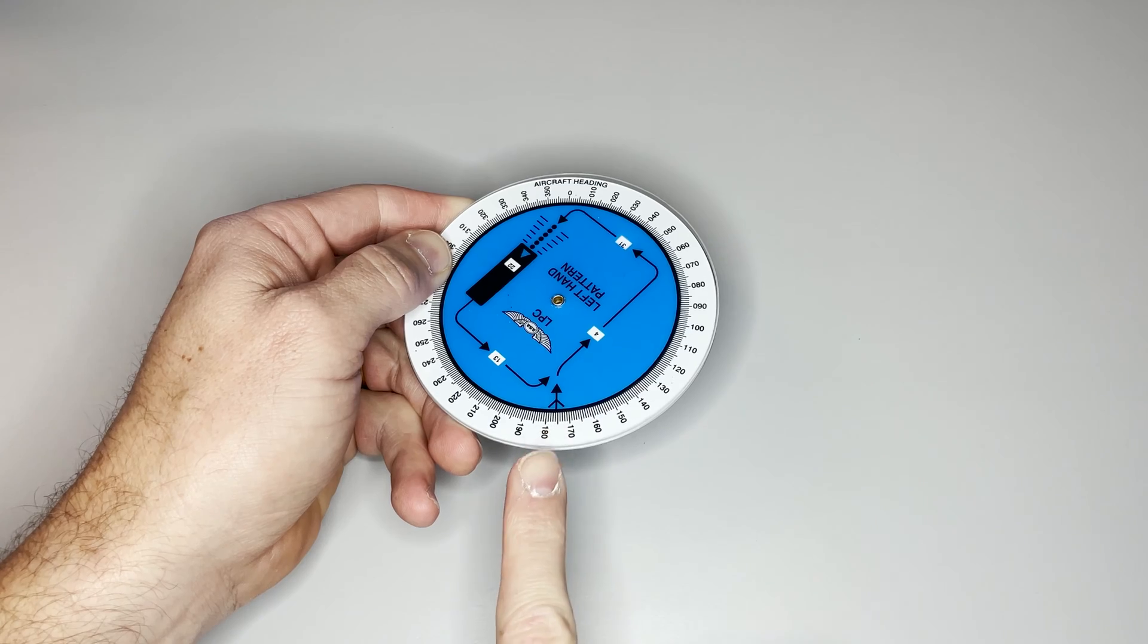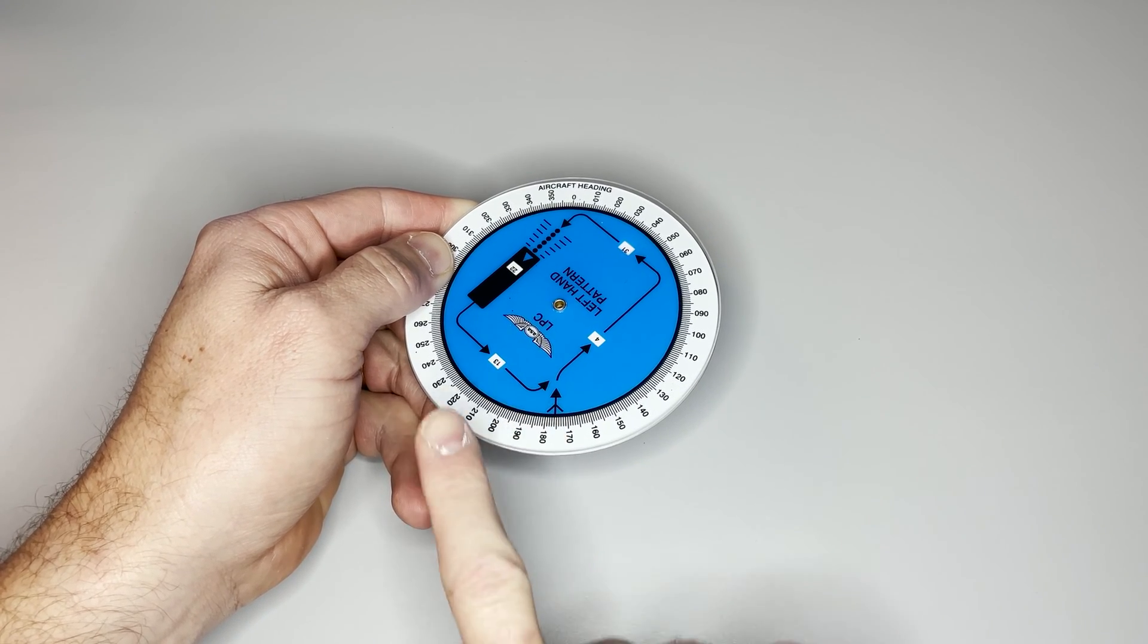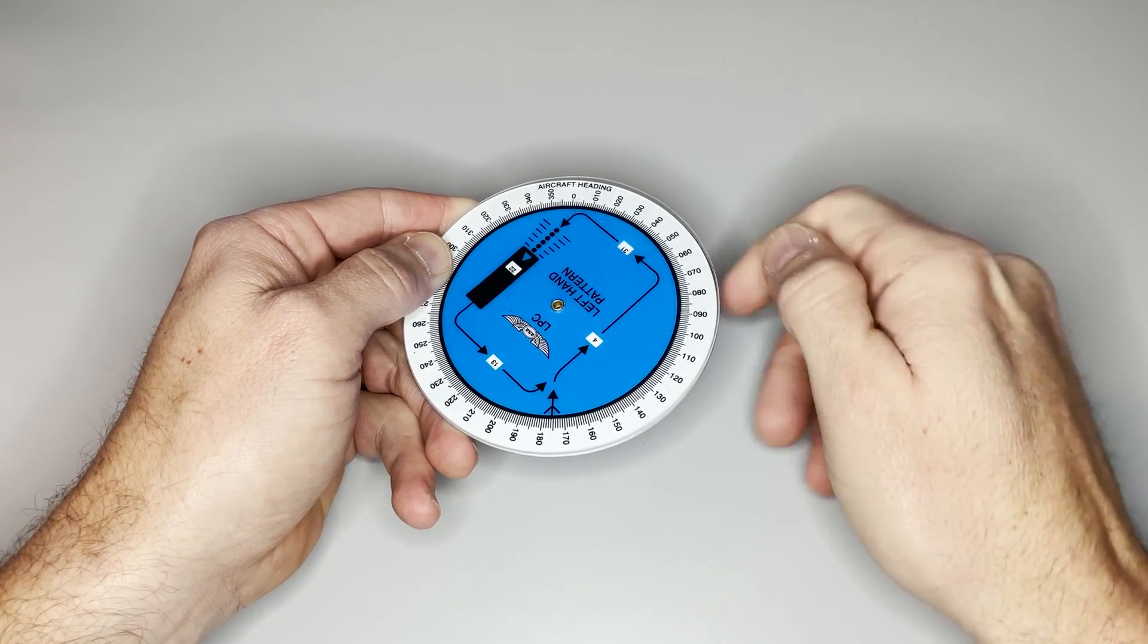And now I can see that I'm coming from the south this direction. This helps me visualize what kind of entry I'm going to make into the traffic pattern.